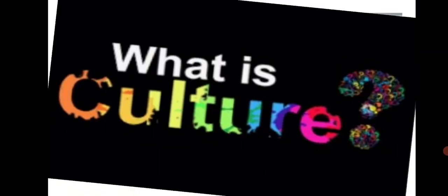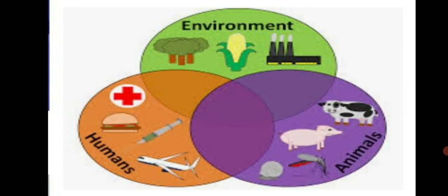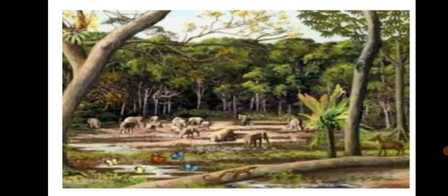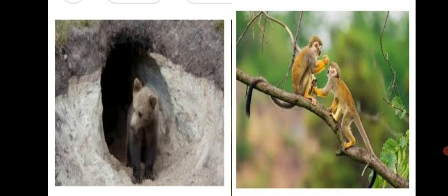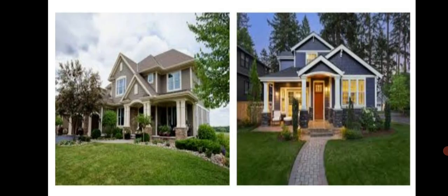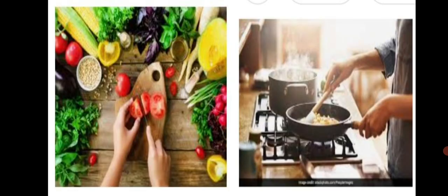Now let us understand what is culture. Humans and all other animals are dependent on their environment and nature for satisfying their needs. However, other animals do not cause any significant change in their surroundings — they do not harm or utilize the surrounding for their own benefit by making any changes in them. For example, bears live in caves and monkeys live on trees; they do not have to build a separate home for themselves. But humans build houses. Humans do not eat their food in its natural form as other animals do — they roast or cook the food, or in other words, they process foodstuffs before eating them.